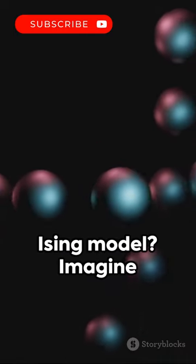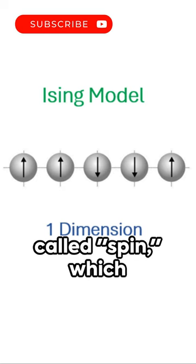Ever heard about the Ising model? Imagine a chain of atoms where each atom possesses a property called spin, which can either point up or down. This chain represents the simplest form of the Ising model.